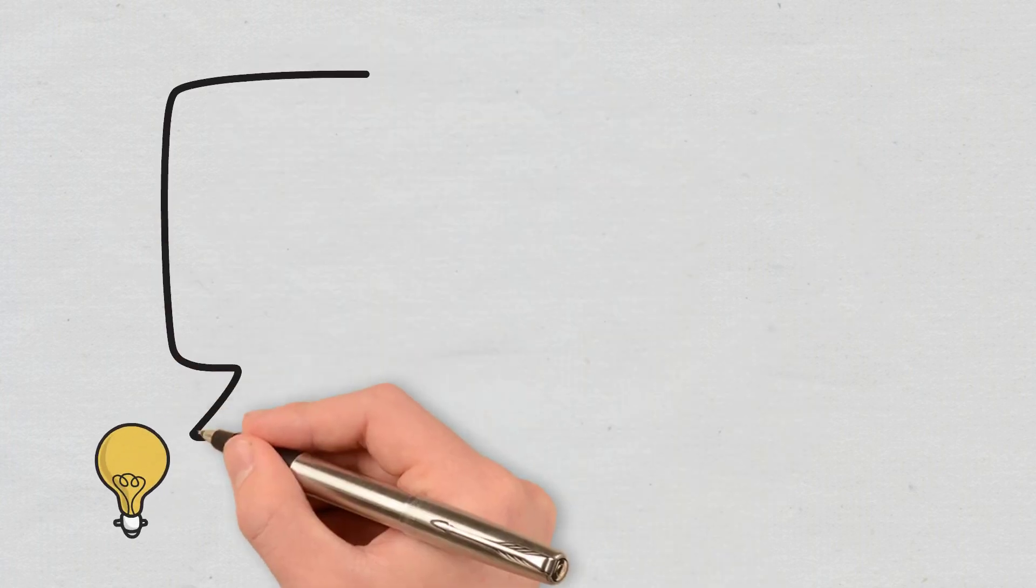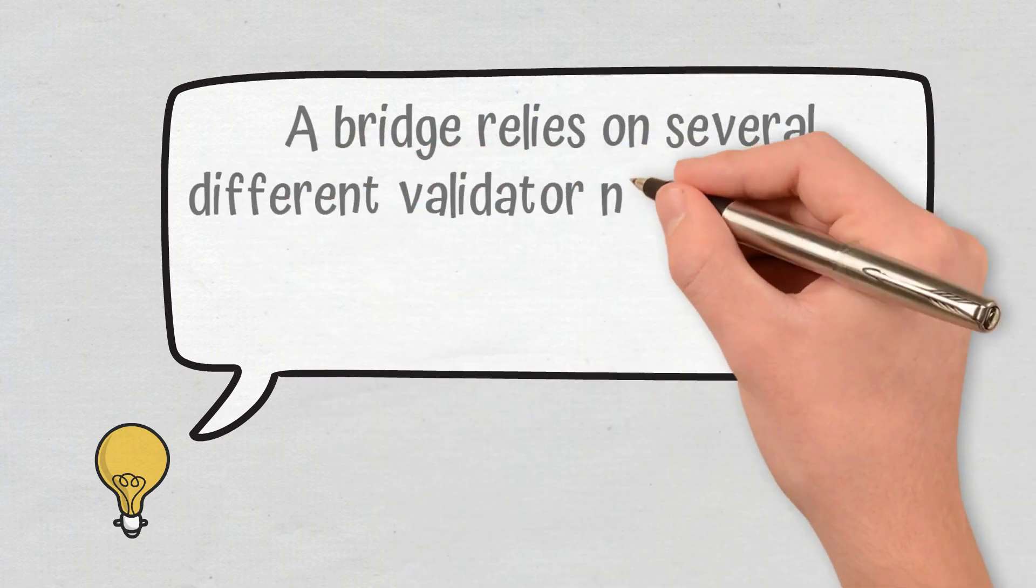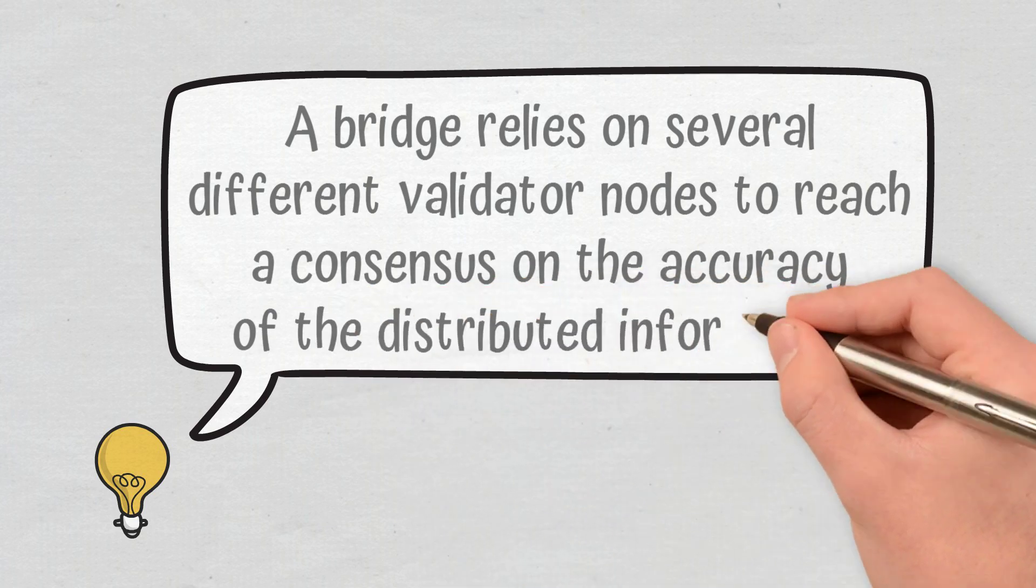The main idea of these systems is that a bridge relies on several different validator nodes to reach a consensus on the accuracy of the distributed information.